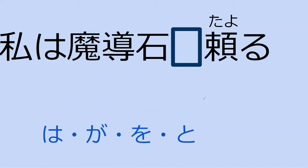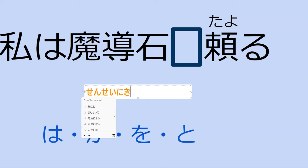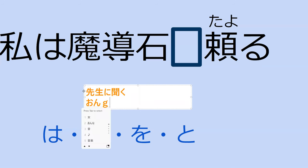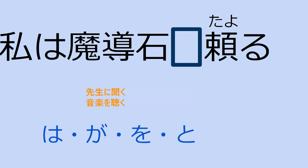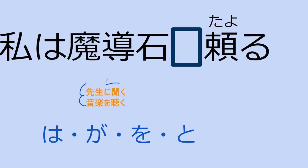For example, 先生に聞く means 'to ask the teacher a question,' and 音楽を聞く means 'to listen to music' — because 聞く can mean 'to ask' or 'to listen.' So 先生を聞く would mean you're listening to the thing called 'teacher,' whereas 先生に聞く means you're listening to what the teacher is going to say. That's how it gets the 'ask' meaning — it's a good way of thinking about it.